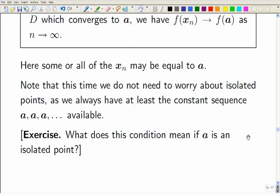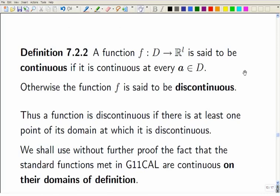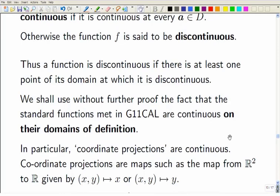I've already answered this exercise. If A is an isolated point, this condition is automatically satisfied, and the function has to be continuous. Now, continuous on the whole of D means you're continuous at every point of D. Otherwise, you're a discontinuous function. To be discontinuous means at least one point where continuity fails. So, discontinuous at one point means you're a discontinuous function, even if you're continuous everywhere else. This question of continuity or discontinuity is not a question about whether the function is defined or not, but whether there's some problem with the limits.